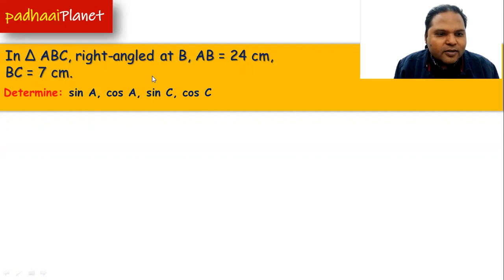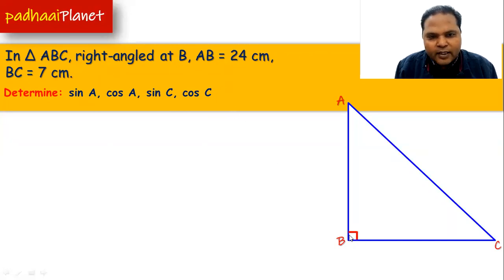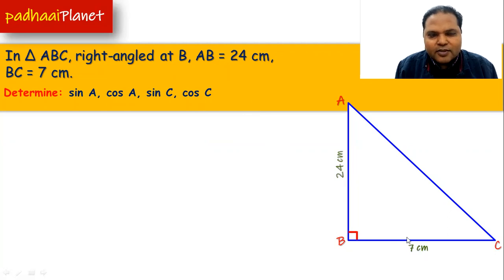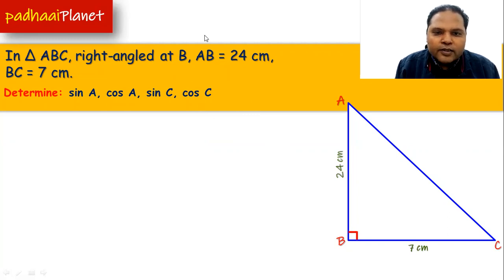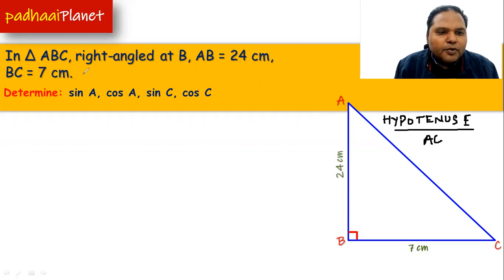Now let's see what this question will shape up when we have this triangle ABC. The question says that point B is a right angle, and the sides AB and BC are 24 centimeters and 7 centimeters. Before we attempt this question further, we need to first find out the value of its hypotenuse, which is AC.